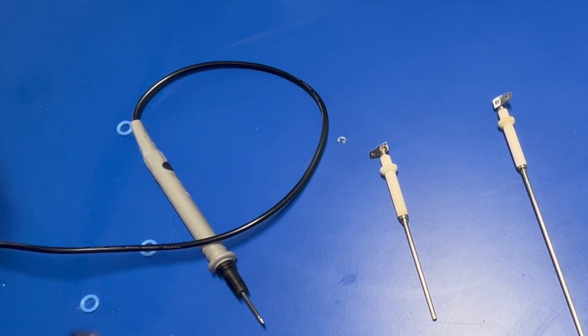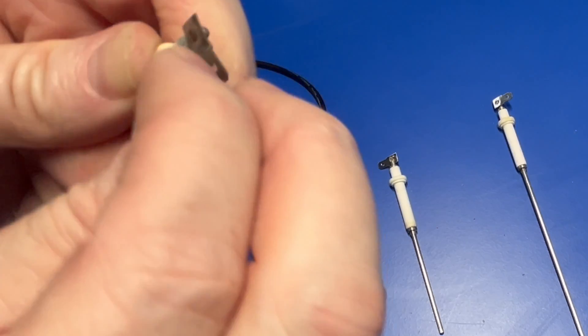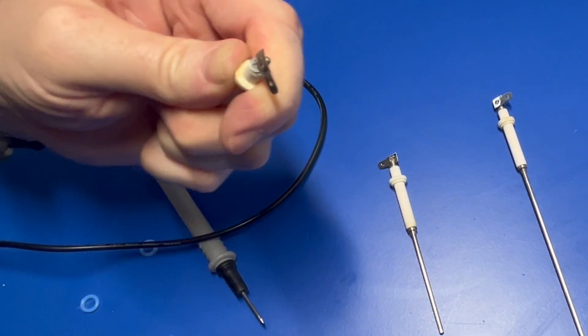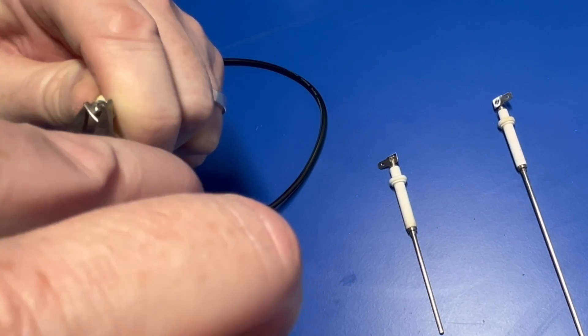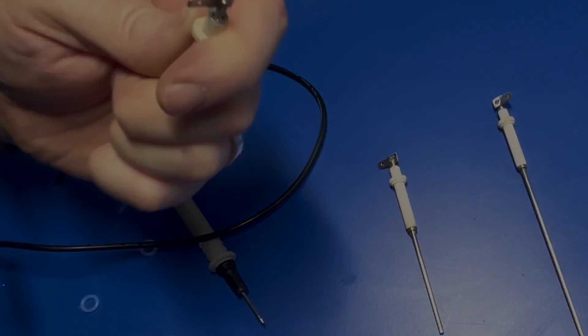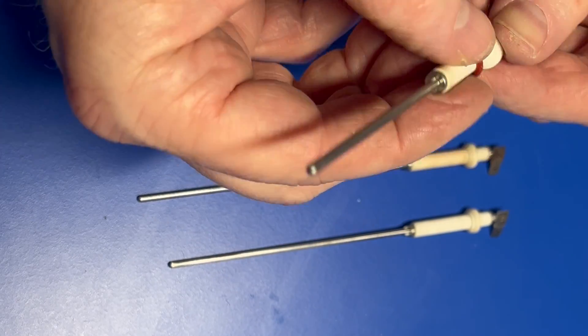To put them back together, use some small pliers to get the e-ring back in place. Again, be very careful here because they do tend to spring off. Then we'll replace the outer o-rings and apply a little grease.